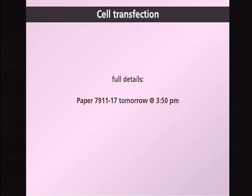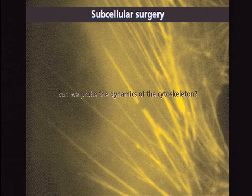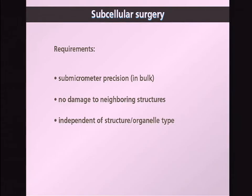Now, from the surface of the cell, let's turn our attention to the bulk. A number of years ago I was speaking to a colleague at the Harvard Medical School, Professor Don Engber, who was interested in studying the cytoskeleton and asked whether it would be possible to use laser pulses to measure the viscoelastic properties of individual actin fiber bundles inside a living cell. The requirements would be submicrometer precision in the bulk to avoid damage to the cell membrane or neighboring structures, and independence from the structure or organelle type.